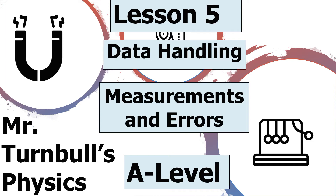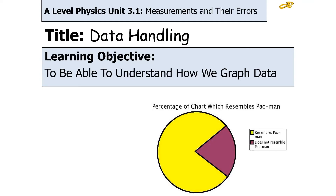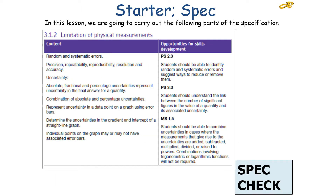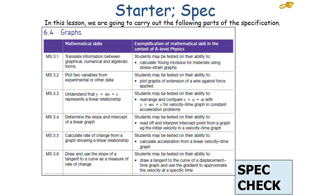Hello, and welcome to today's lesson on data handling, which forms part of the measurements and errors topic in AQA A-level physics. In today's lesson, we're going to try to understand how we graph data in A-level physics. If we're successful, we can understand the rules of graphing with error bars, the properties of straight line graphs, how to determine the line of best fit, and how to calculate uncertainties from graphs. This falls into AQA A-level physics specification 3.1.2, limitation of physical measurements, and skill 6.4, graphs.